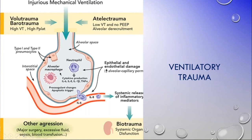Biotrauma involves everything happening at the alveolar level as well as effects on the kidney and the gut. When looking at something like ARDS in adults, it often develops due to excessive fluid resuscitation, often crystalloid. It's very important that when resuscitating, it's not only about the pressure used to ventilate the lung, but also ensuring adequate blood pressure and not giving excessive fluid — because exudate such as with pneumonia will make ventilation very difficult.